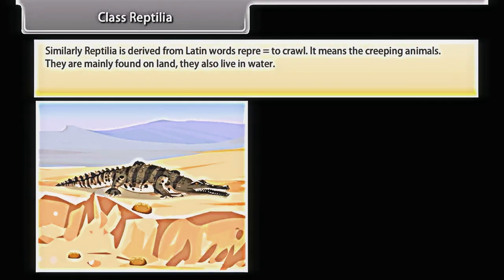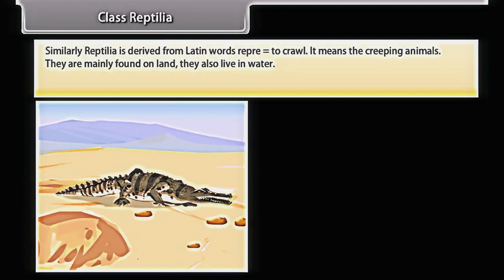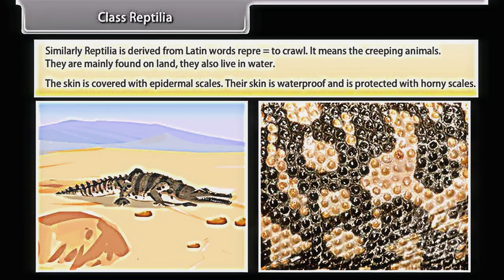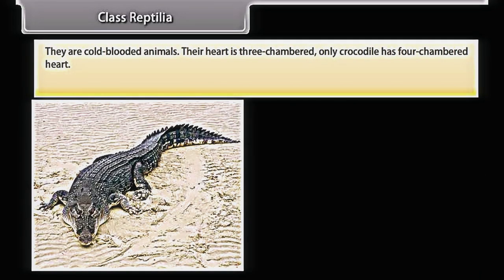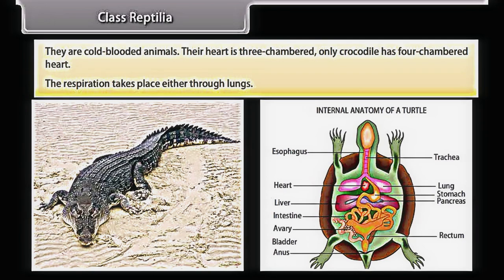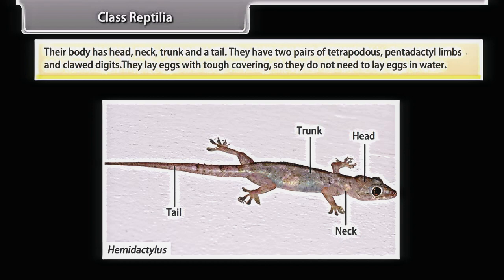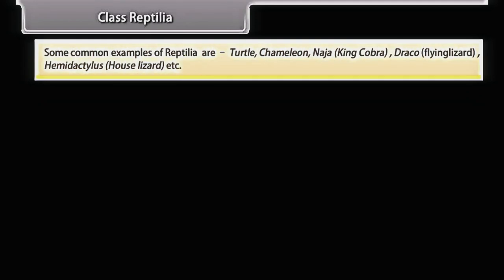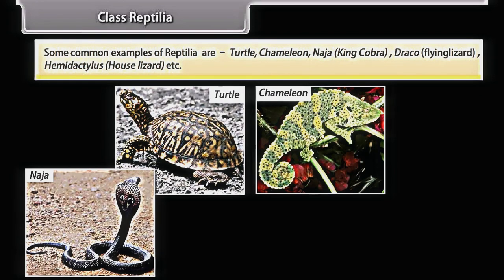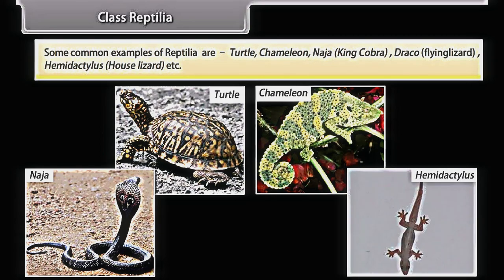Reptilia is derived from Latin 'repere', meaning to crawl — the creeping animals. They are mainly found on land but also live in water. The skin is covered with epidermal scales that are waterproof and protected with horny scales. They are cold-blooded; their heart is three-chambered except for crocodile, which has a four-chambered heart. Respiration takes place through lungs. Their body has head, neck, trunk, and a tail; they have two pairs of tetrapod pentadactyl limbs with clawed digits. They lay eggs with tough covering so they do not need to lay eggs in water. Common examples are turtle, chameleon, king cobra, Draco (flying lizard), and Hemidactylus (house lizard).